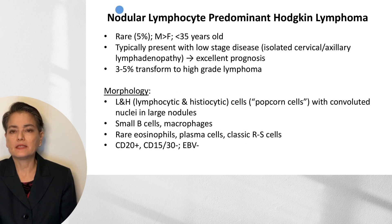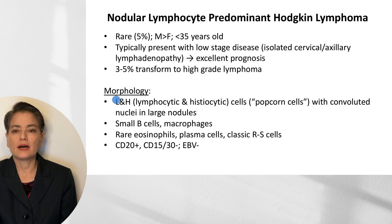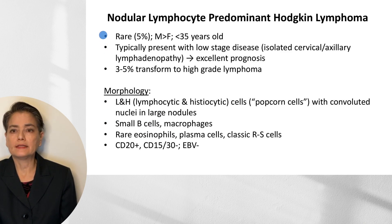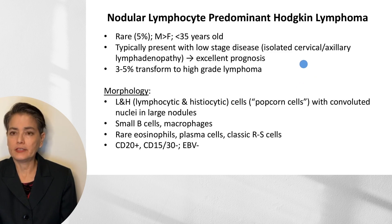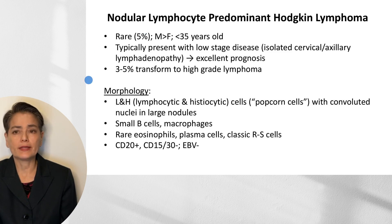The nodular aspect in nodular lymphocyte-predominant HL is different from nodular sclerosis: instead of collagen-formed nodules, we get nodules of popcorn cells within the lymph node, surrounded by small B cells and macrophages. This is a rare disease with a male predominance; most patients are under the age of 35. Patients typically present with low-stage disease — isolated cervical or axillary lymphadenopathy — and low-stage disease is associated with an excellent prognosis. About 3% to 5% can transform to a high-grade lymphoma such as diffuse large B cell lymphoma.